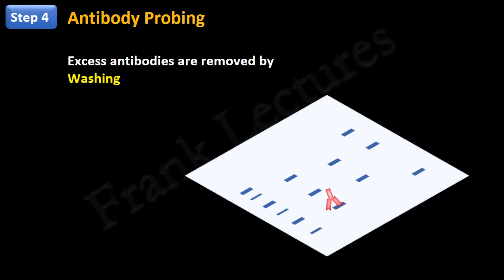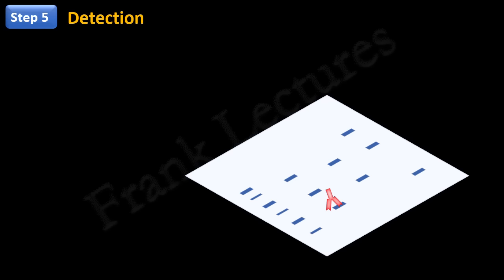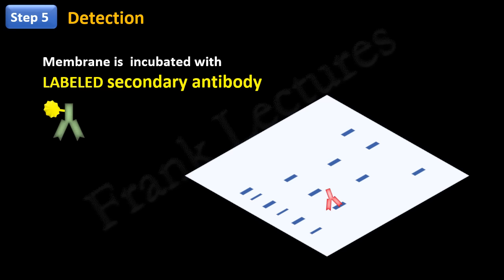Final step of Western blotting is the detection, followed by further analysis of the protein. The membrane is now incubated with labeled secondary antibody. Here we need to understand that we could have used labeled primary antibody in the previous step, and that would have resulted in direct detection of the target protein. But use of secondary antibodies are preferred to maximize the sensitivity of the detection.